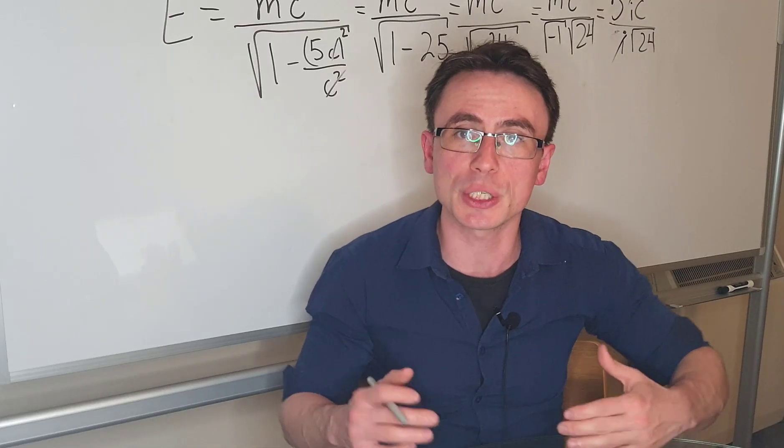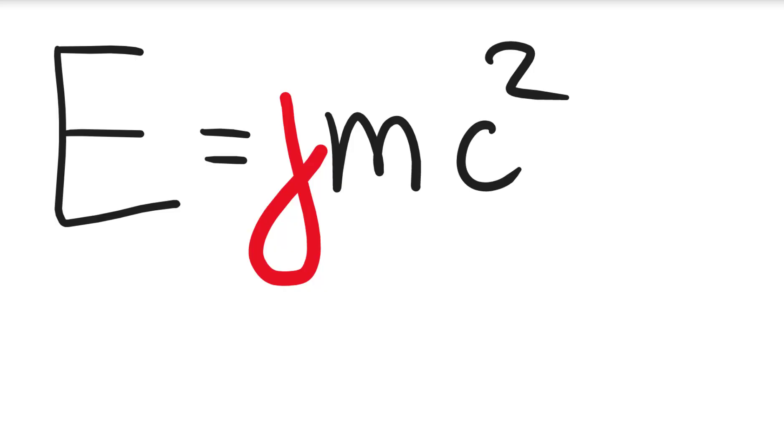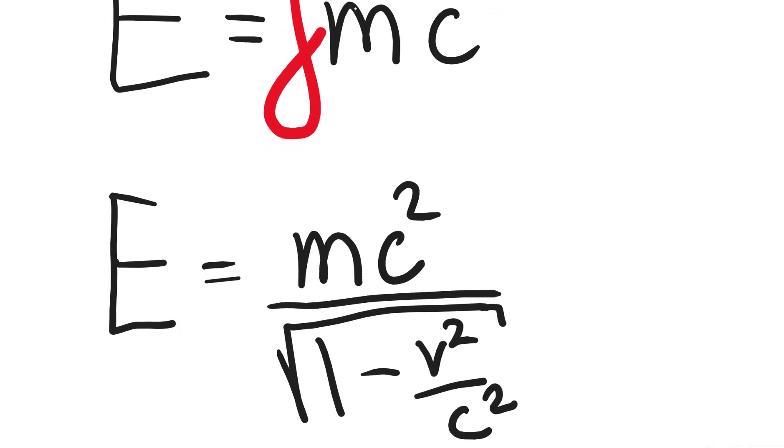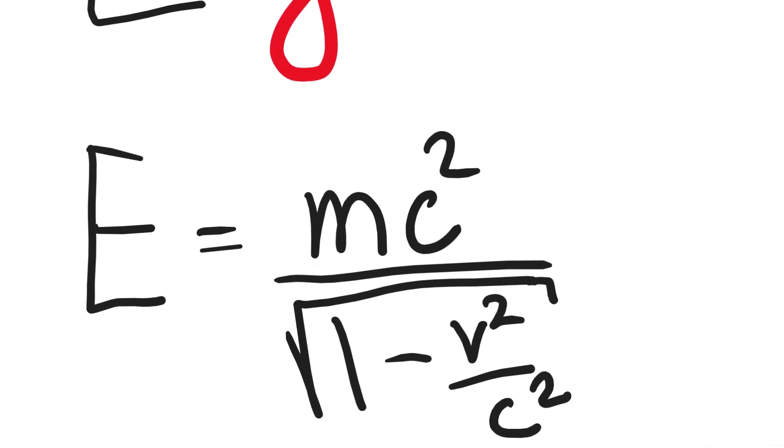In the theory of relativity you get an additional gamma factor which is equal to one over the square root of one minus v² over c².